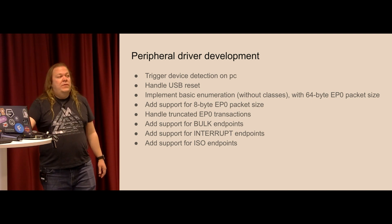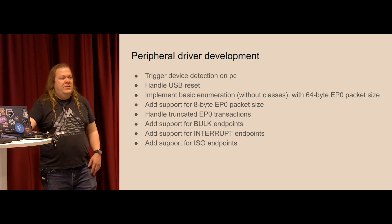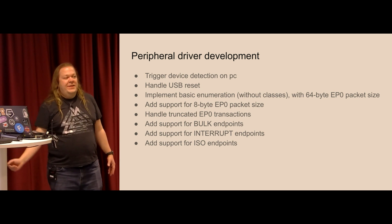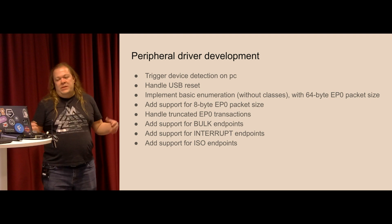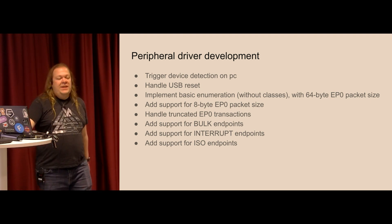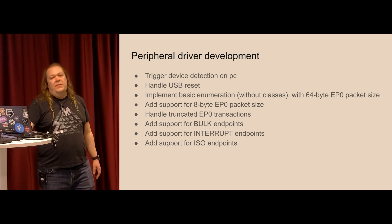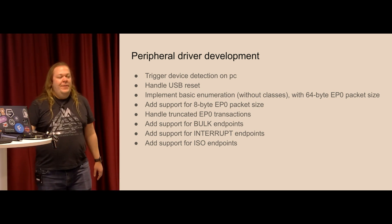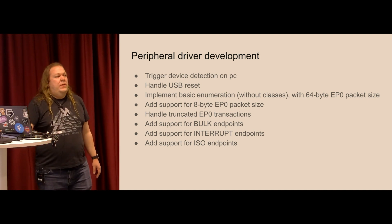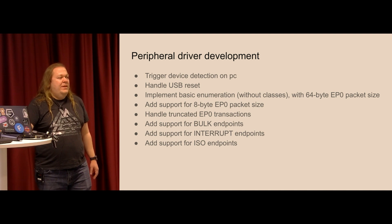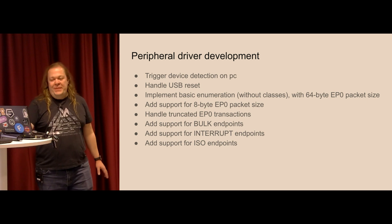USB full speed devices support 64-byte and 8-byte packets for the control endpoint. If you set it to 8 bytes the whole report doesn't fit, and bugs happen. There are also truncated EP0 transactions where the host says it wants 64 bytes but after the first 8 bytes says stop. This is a really weird condition — on NRF microcontrollers there seems to be no good way to handle it, but Linux does this every time. You can trust that this will be broken if you don't think about it.